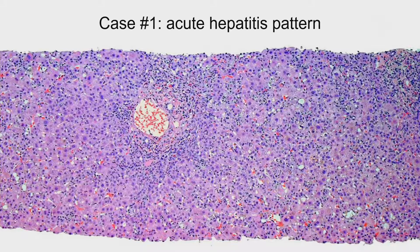This is the acute hepatitis pattern. At low power, you have a lot of lobular injury, which kind of dominates the picture. There is always in acute hepatitis a little bit of portal inflammation. I think the common error that people make who don't do a lot of liver is as soon as they see portal inflammation, they start thinking about chronic hepatitis. There's always a little bit of portal inflammation in acute hepatitis.